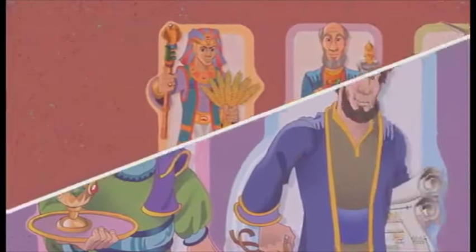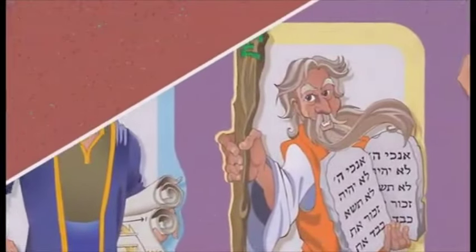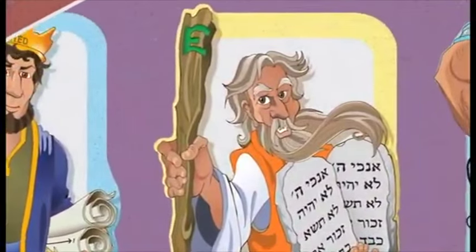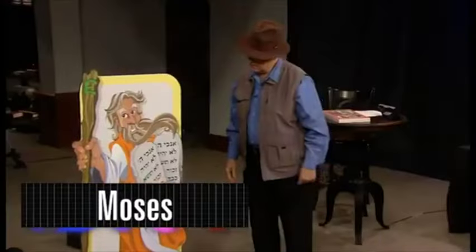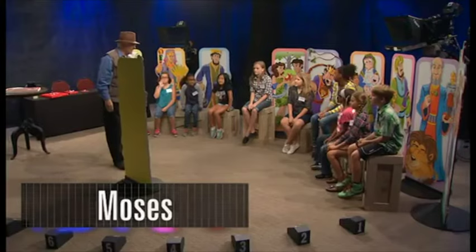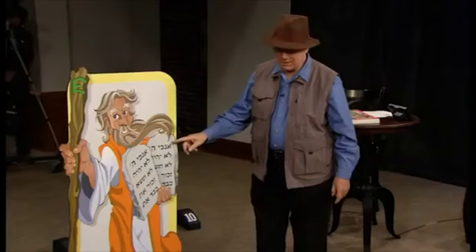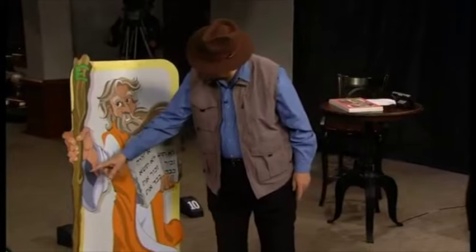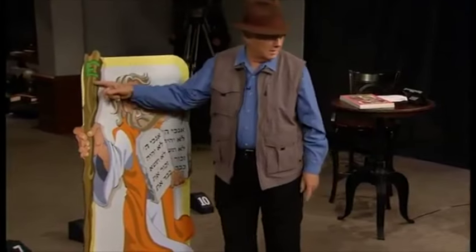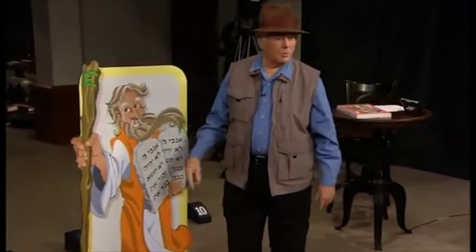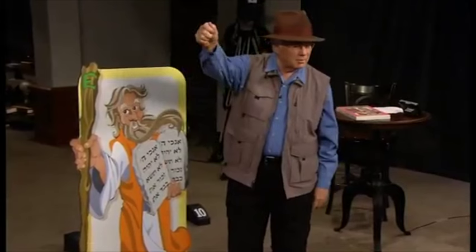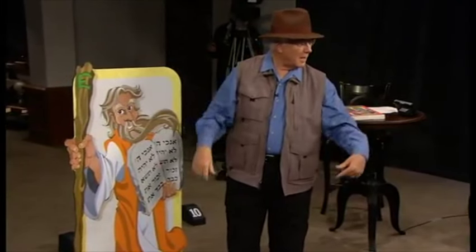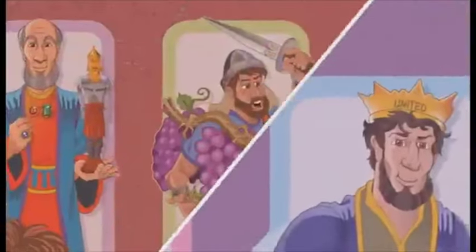A student picks out Moses. 'How did you know it was Moses?' 'Because he had the stones with the Ten Commandments on it.' And what is this he's holding? A staff. And what did he do with that staff? He parted the sea — the Red Sea.